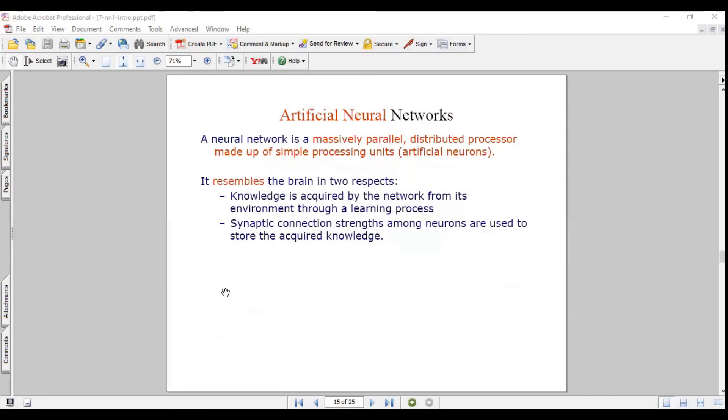A neural network is a massive parallel distributed processor made of simple processing units. It resembles the brain in two aspects: knowledge is acquired by the network from its environment through a learning process, and synaptic connections between neurons are used to store acquired knowledge.